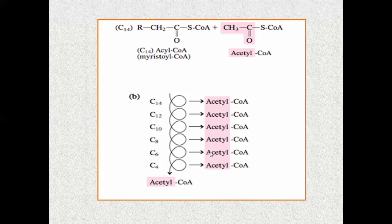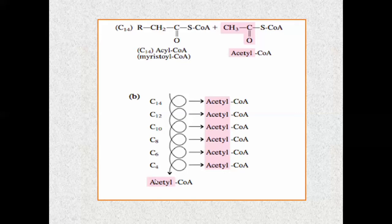Carbon-8 releases acetyl-CoA to become carbon-6. Then two more carbons are released as acetyl-CoA, becoming carbon-4. Finally, carbon-4 undergoes cleavage to give two acetyl-CoA molecules simultaneously, since 4 carbons split into 2 plus 2. So all these beta-oxidation reactions result in two-carbon units released in the form of acetyl-CoA molecules.